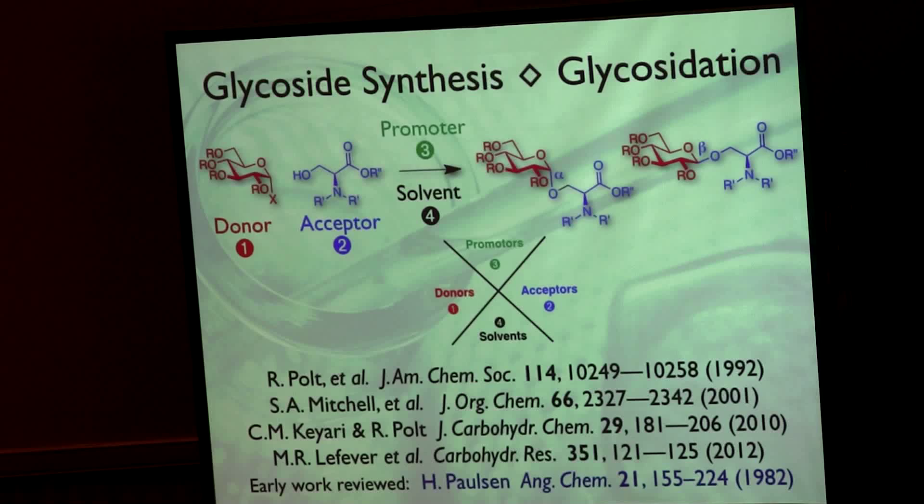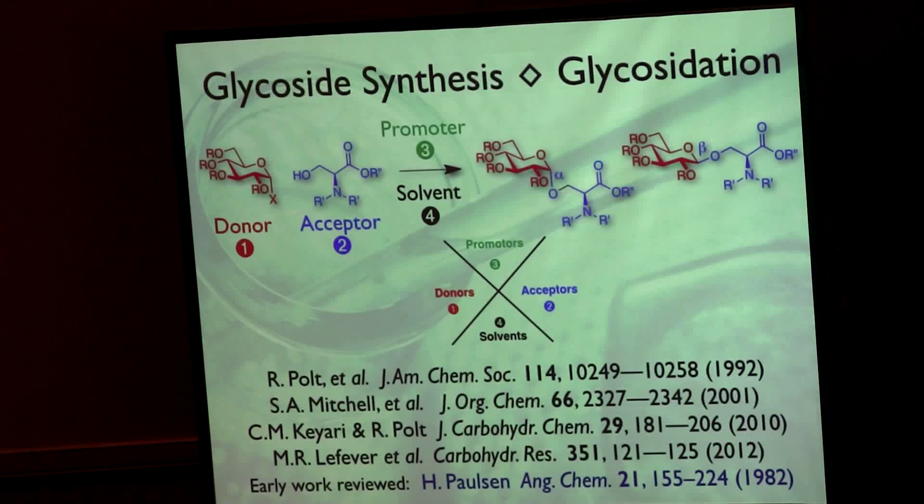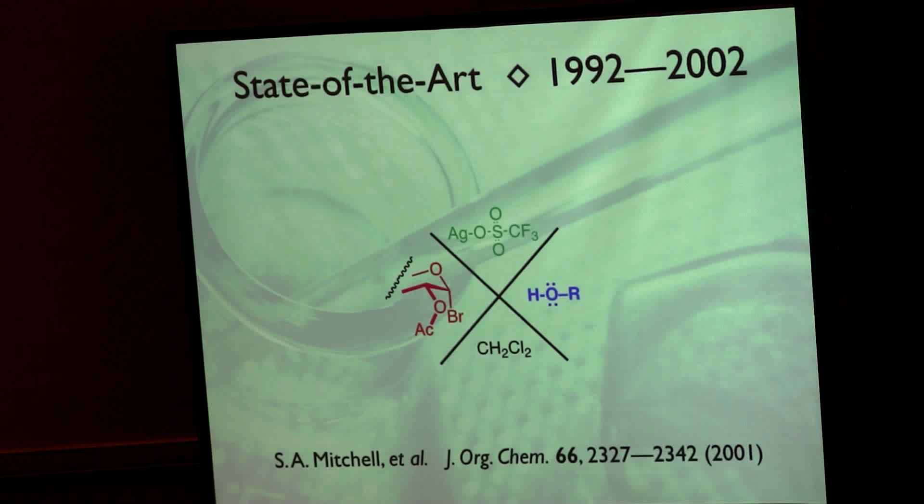We started doing this back in the early 90s when I sort of started drifting away from the total synthesis of natural products community which I was trained in. But in the old days, and the old days weren't that long ago, you used some sort of activated glycosyl donor. This Koenigs-Knorr type intermediate has been known since about 1910.